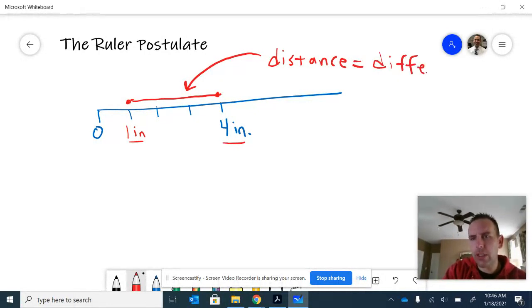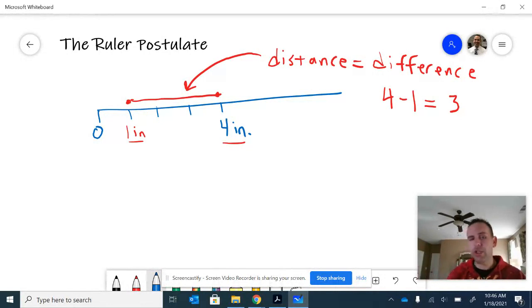Now it is actually the absolute value of the difference, but I would rather just say take the larger number and subtract the smaller number. So if you start with four inches and subtract one, you get three. So you can use this idea and expand it out to any two points on a number line in the direction.